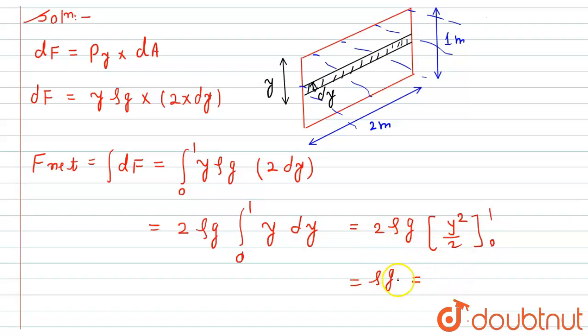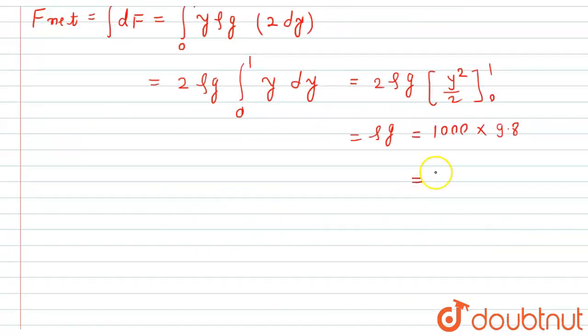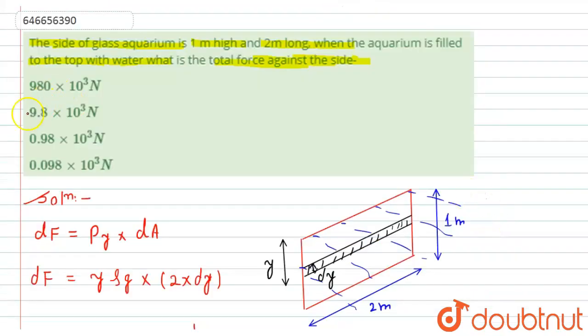So 2 and 2 will get cancelled. This simply becomes rho into g. Now the value of density is 1000 multiplied by g is 9.8. So this will be equal to 9.8 times 10 to the 3 newtons. And this will be the required answer.